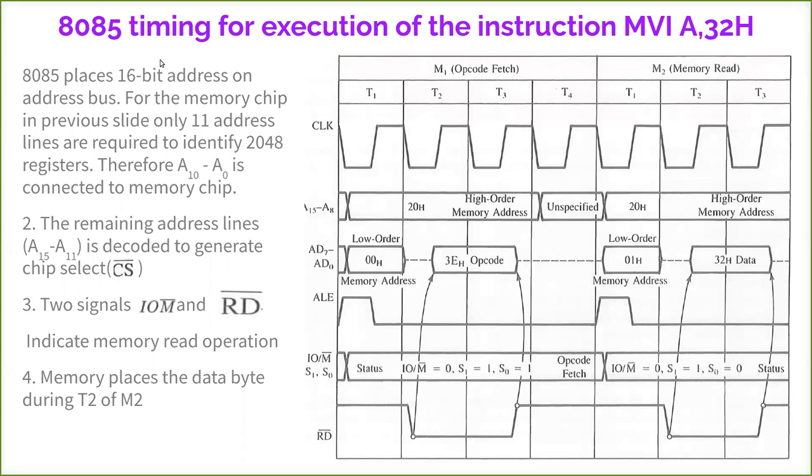Before that, we will just see, we have already seen this timing diagram, but this explanation is needed for better understanding of this memory interface. Let's consider the instruction MVI A,32H. That is, move immediate into the accumulator the value 32H. Once this instruction is executed, the value 32H is moved to the accumulator and it is stored in the accumulator.